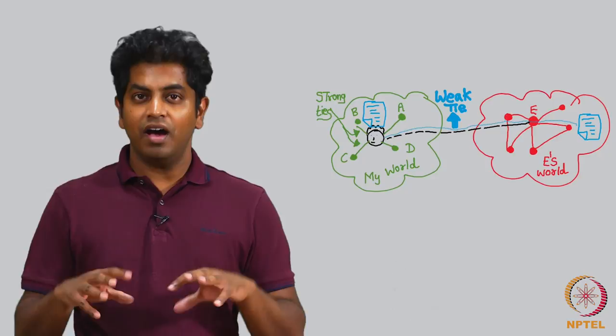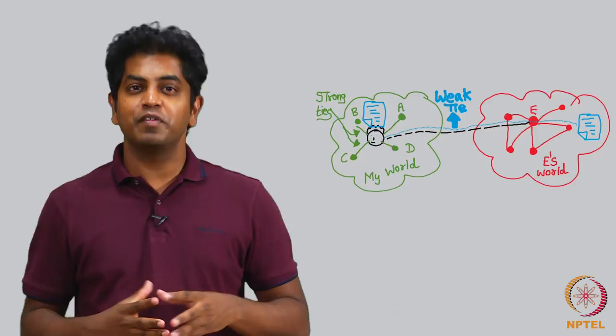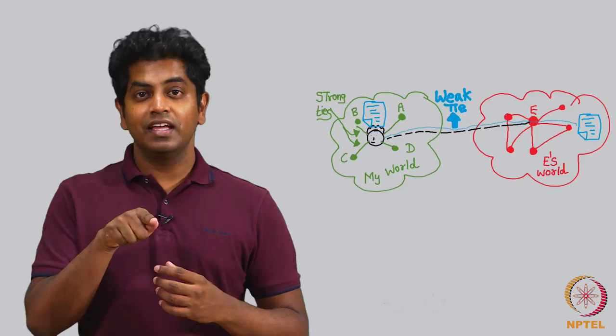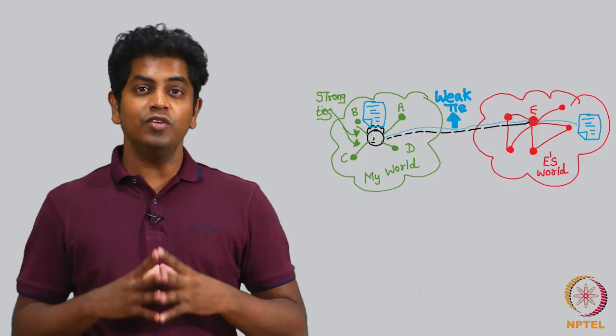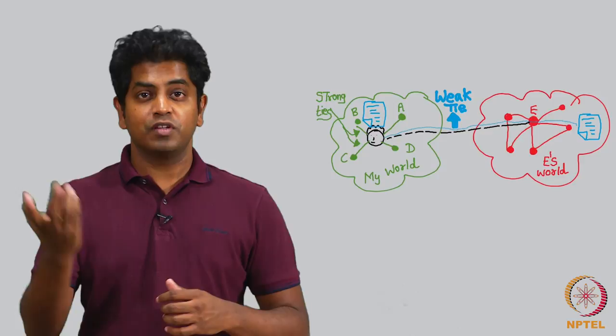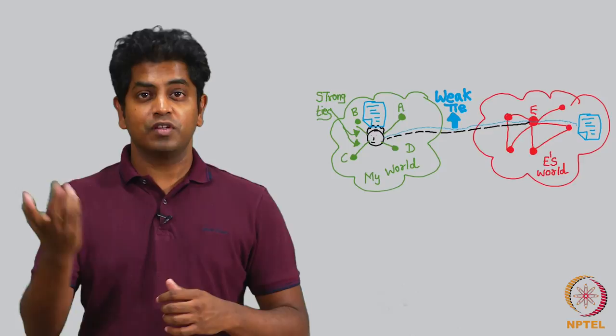Strong ties are weak when it comes to getting job related information, new job related information while a weak tie such as E is strong in the sense that any new information that I get which is worth knowing, let's say in terms of new job, is from E. And hence this weak tie is actually strong while strong ties are actually weak.